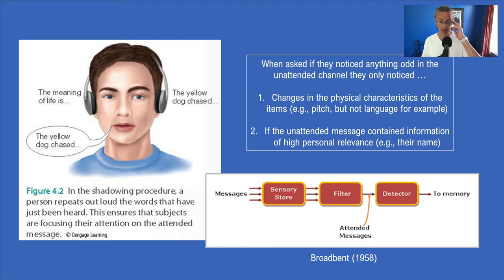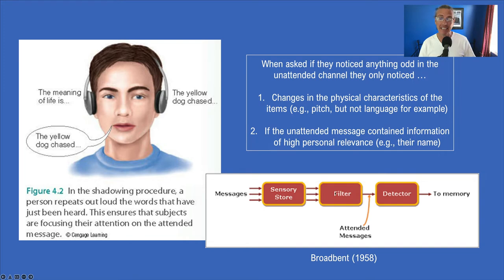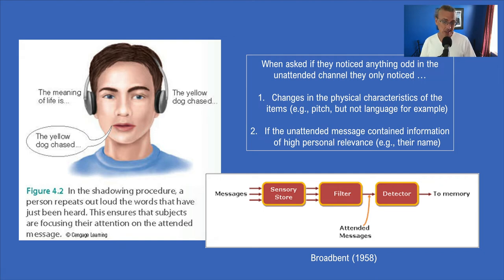Broadbent proposed that incoming messages go into a sensory store and then hit a filter. That filter selects what we attend to — in this case the left ear — so only the attended message gets through. The filter operates at a very physical level of processing, detecting only raw characteristics of the stimulus. Everything else is filtered out, which is why people remember what they attended to but nothing from the unattended channel.